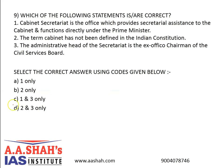The correct answer is C, 1 and 3 only. The second statement is incorrect because Article 352 defines the term 'cabinet' as the council consisting of the Prime Minister and other ministers of cabinet rank. The administrative head of the Secretariat is the Cabinet Secretary, who is also the ex-officio chairman of the Civil Services Board.